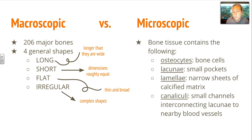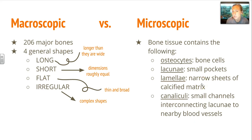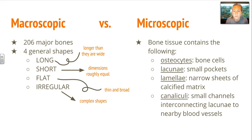Microscopically, bone tissue is made up of the following main components. You have your osteocytes, or bone cells. Lacunae store those osteocytes — they are small pockets between your lamellae, or narrow sheets of calcified matrix. Canaliculi are small channels that interconnect the lacunae to nearby vessels for the oxygen requirements needed by the tissue.